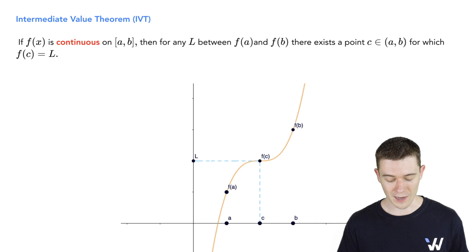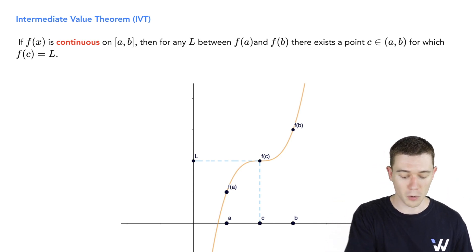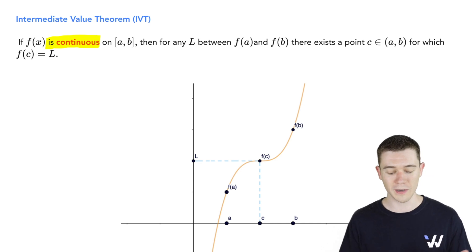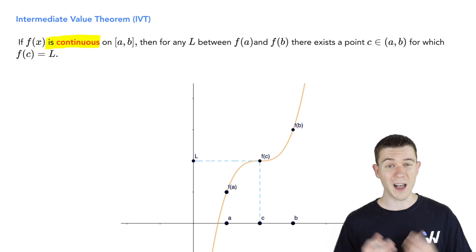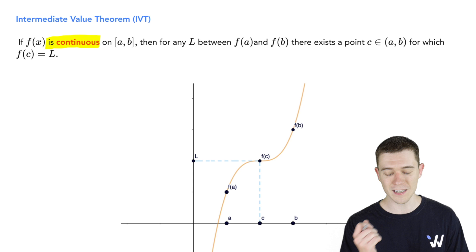I think this picture says a lot. Given any continuous function, and it's very important that we have that continuity on an interval a to b, for any value L between the function evaluated at a and b, f of a and f of b, there exists some point in that interval that our function evaluated there equals L.